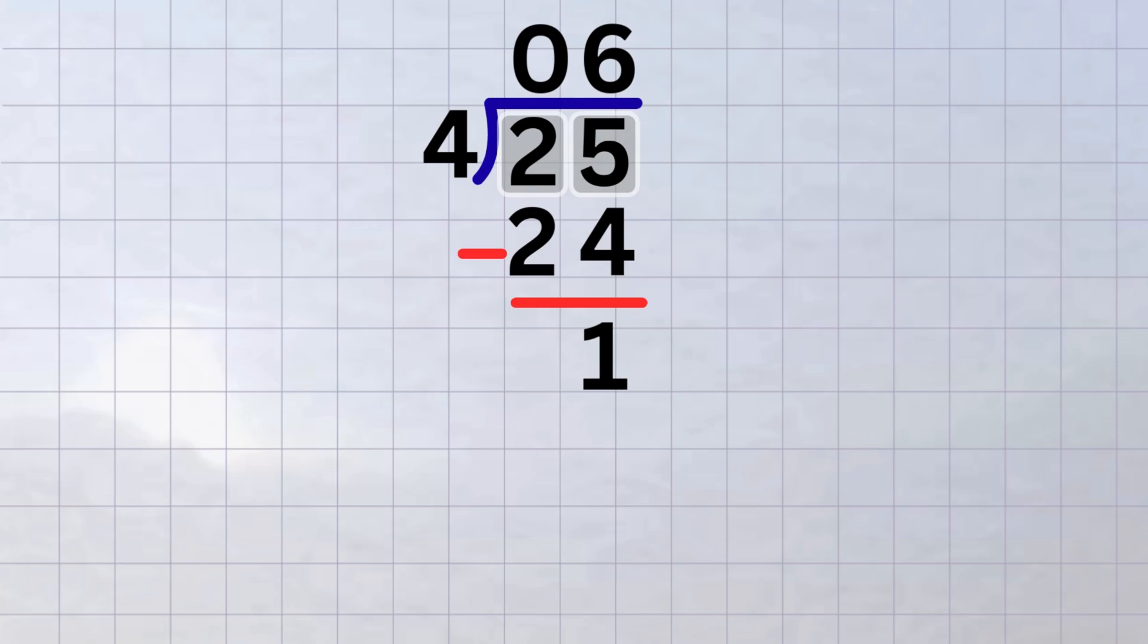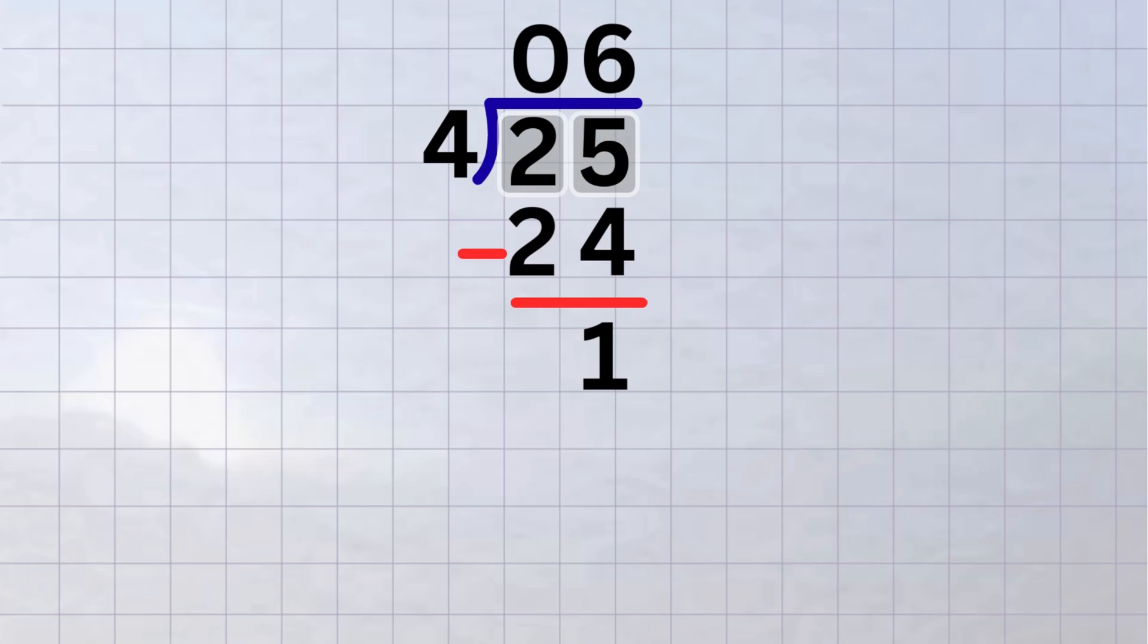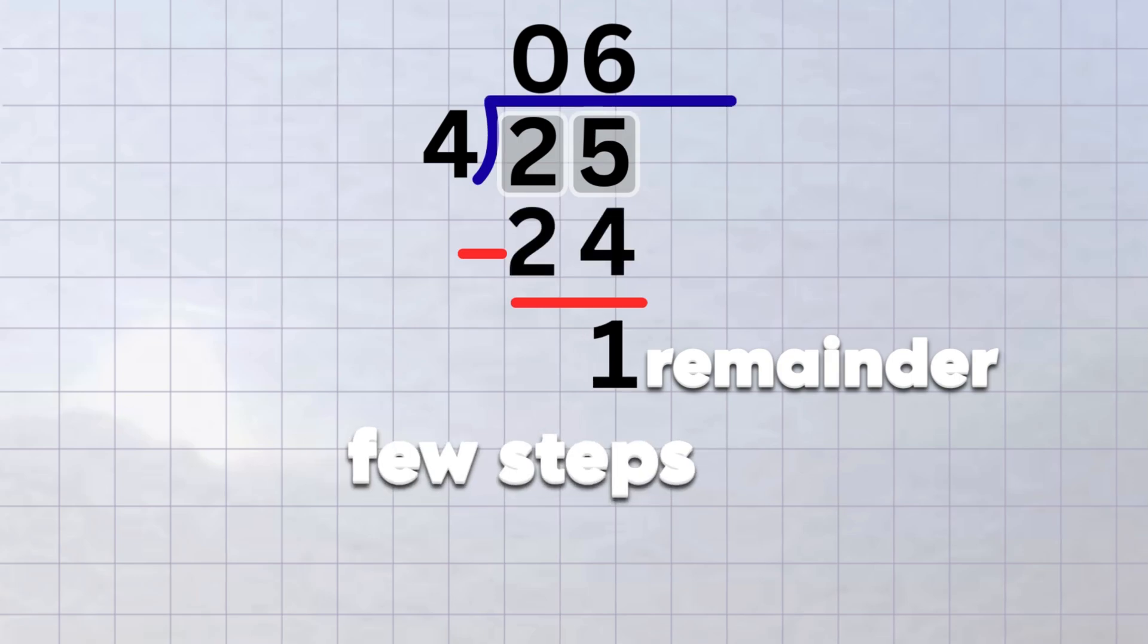Now, I know what some of you are thinking. What do I do when there's a remainder? Do I stop, or do I keep dividing? If you're only working with whole numbers, you stop once you've brought down every digit and what's left is smaller than the divisor. That leftover is called the remainder. Got it? This problem was quick, just a few steps, but others can take longer.